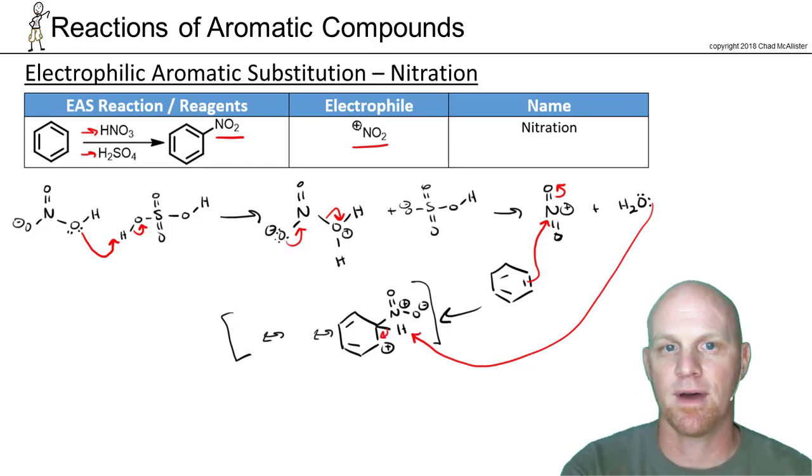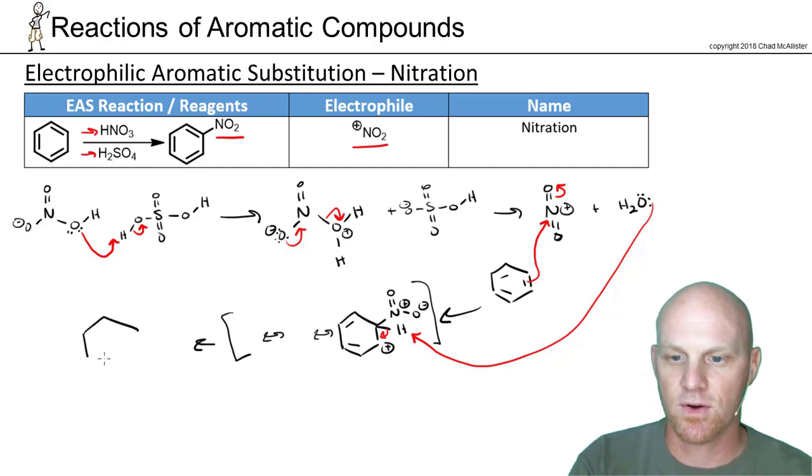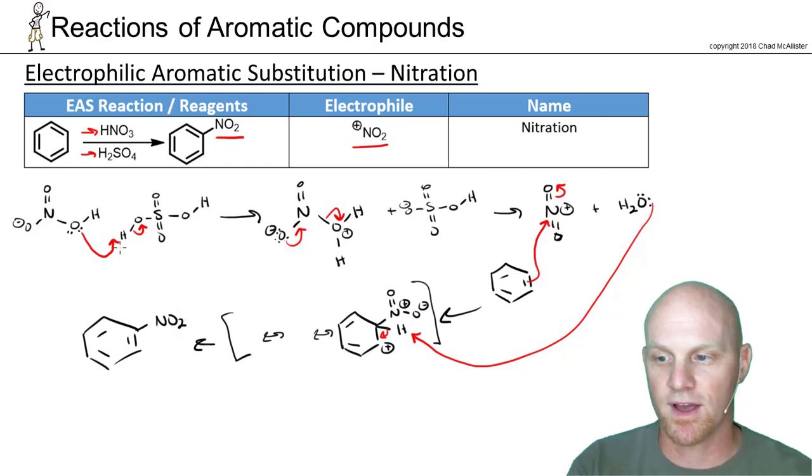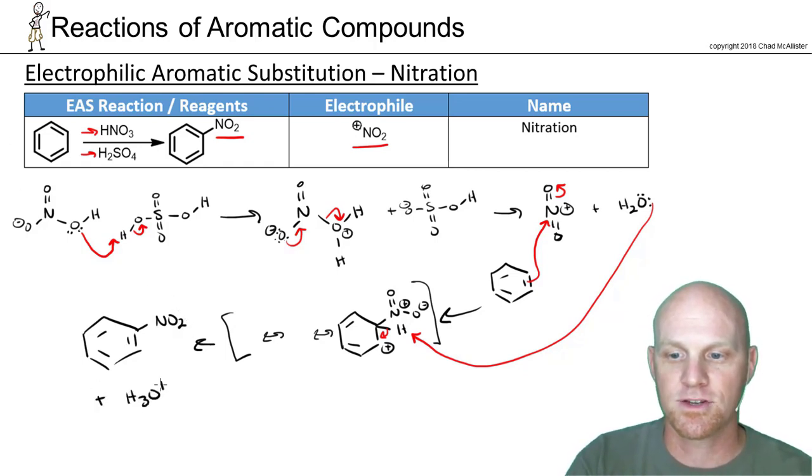And we'll restore aromaticity back to our benzene ring. And so in our case now, we've got our benzene ring back. It's now got this NO2 group. That's the shorthand. And then we've also formed some H3O+.